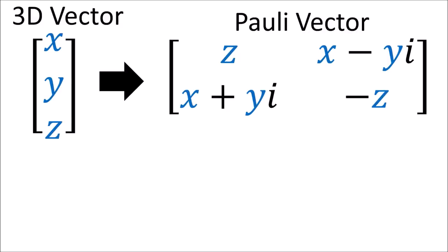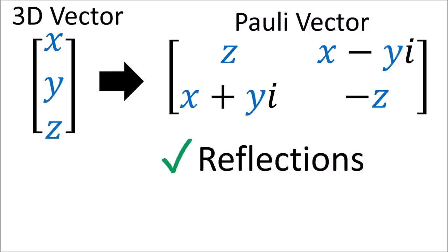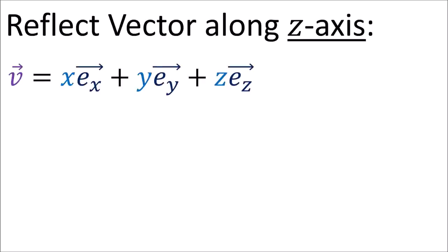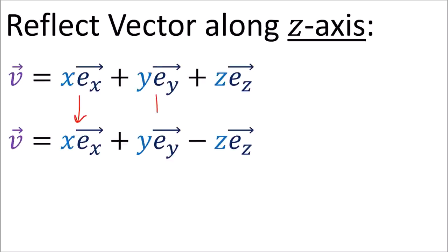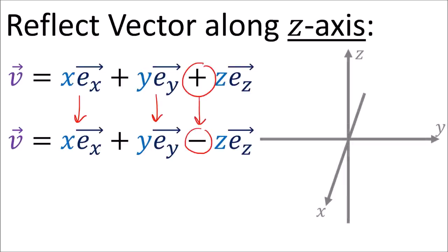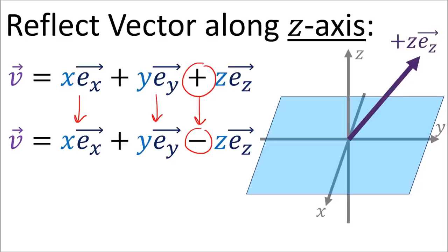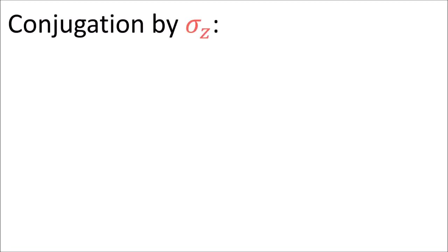This polyvector might seem strange, but it's very useful for doing geometric transformations such as reflections and rotations. Remember, if we want to reflect our vector along the z-axis, we just leave the x and y components alone and flip the sign of the z-component. I'm now going to introduce an operation called conjugation. When we conjugate by sigma z, it means we multiply on the left by sigma z and on the right by sigma z inverse.